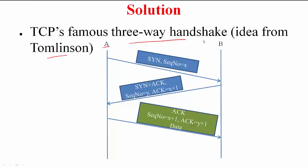Here is the solution: the famous 3-way handshake of TCP. This idea was proposed by Tomlinson. Suppose A wants to establish a connection with B. It is going to send this initial packet, the initial synchronization packet. As part of this packet, it is going to tell B that I am going to use sequence number starting from X.